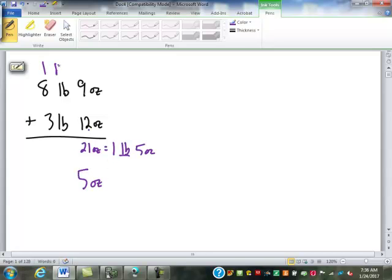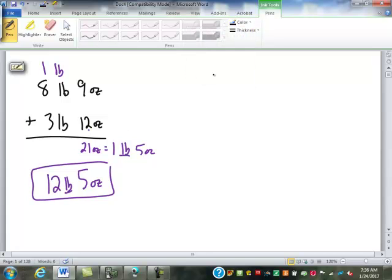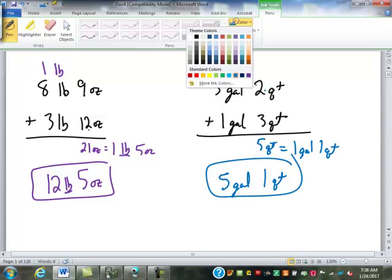Keep the five ounces, carry the one pound. One in eight is nine, plus three is twelve. And we might have something like this. Two plus three is five quarts. Of course that is one gallon, one quart. Keep the quart, carry the gallon, and five gallons. Easy enough.